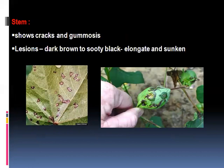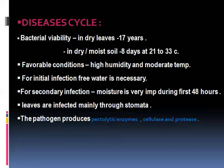In the case of the stem, small cracks are found on the surface. Gummosis and small lesions are also found. These lesions are dark brown in color initially, and afterwards they become sooty black and elongated and sunken in nature.